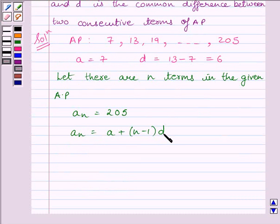As we have already read in the key idea, now we will substitute the corresponding values of an, a, and d in the formula and find the value of n. So, substituting the corresponding values, we get 205 equals 7 plus (n minus 1) multiplied by 6.